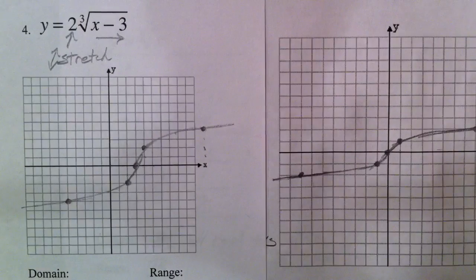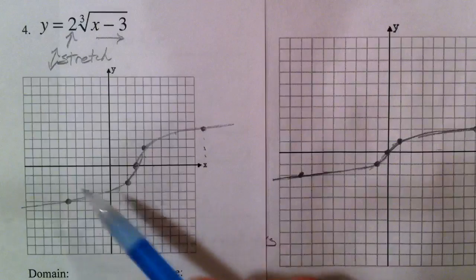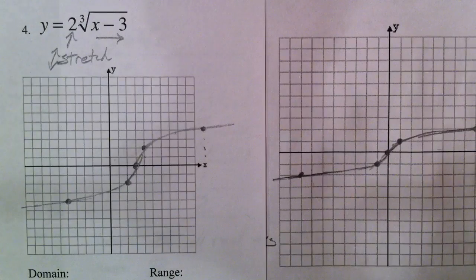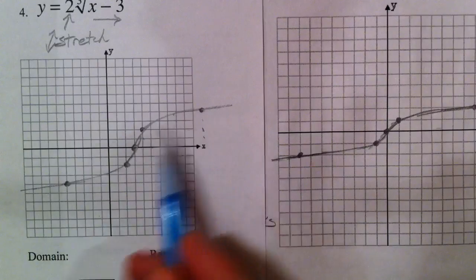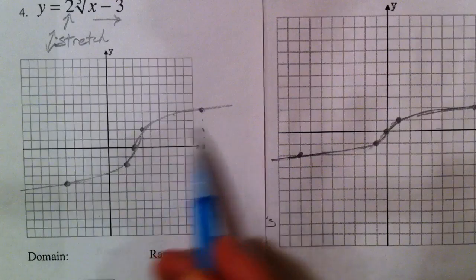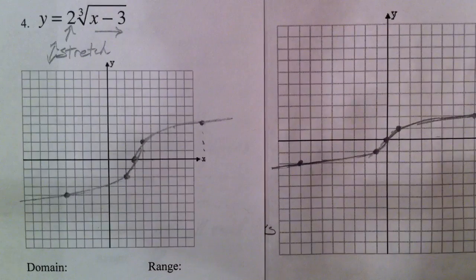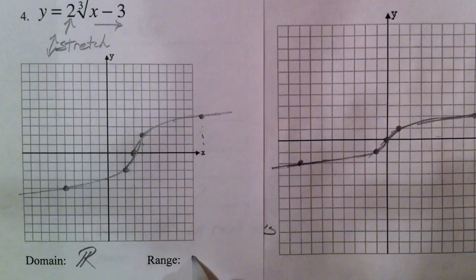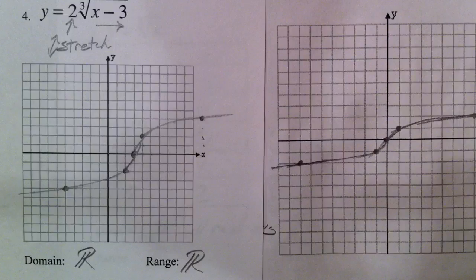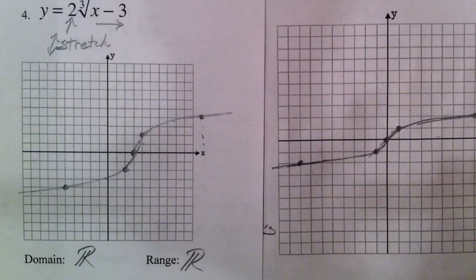There's our cube root graph, stretched and shifted. For domain and range: our x values can still be anything — cube roots aren't a problem — so the domain is all real numbers. And the range, the y value is not changing very quickly but still covers all real numbers.